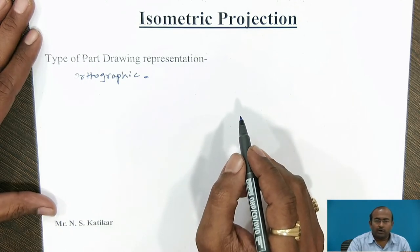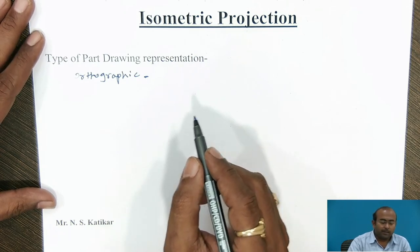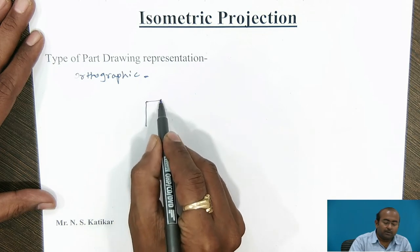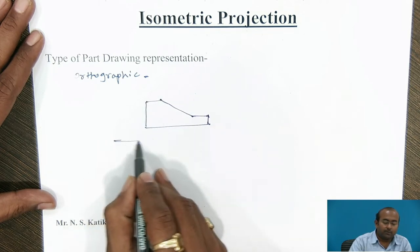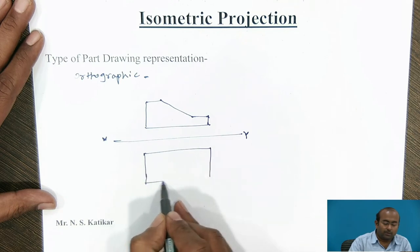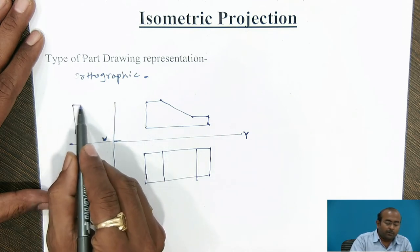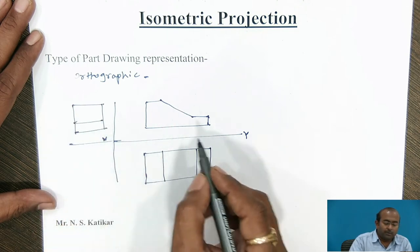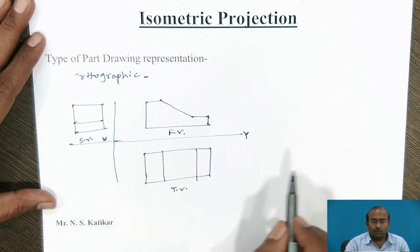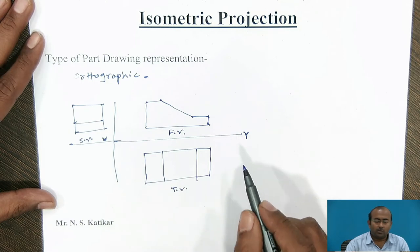In orthographic projection, we need to generate the front view, top view, side view, and as per requirement, sectional views are also provided. For example, consider this part geometry — this is the front view, this is x-y, this is the top view, and I will generate the right-hand side view also. With these two-dimensional three views, everyone has to understand the overall geometry of the part.